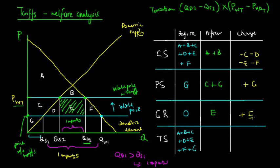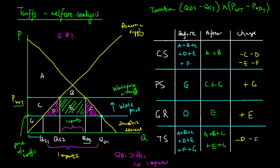Adding up total surplus after the tariff gives A plus B plus C plus E plus G. The overall change is negative D minus F. These two areas, D and F, shaded in pink, represent the deadweight loss.